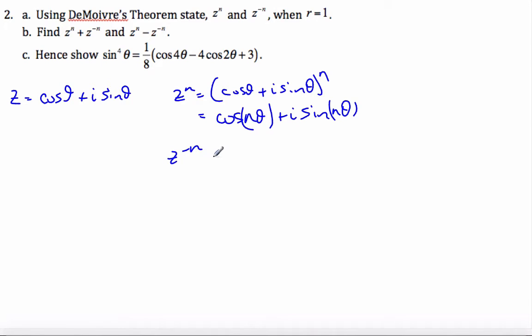And then using DeMoivre's theorem converts that to cosine n theta plus i sine n theta. Similarly, if I do z^(-n), which is 1 over z^n, I get cosine negative n theta plus i sine negative n theta.